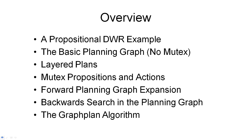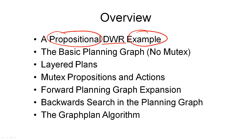Before we go into the details of the graph plan system, I want to start with a simple example that we will use throughout the segment. This example is again from the DocWorker robot domain, so you should be familiar with that. It illustrates the propositional representation, consisting of a propositional planning domain and a propositional planning problem.